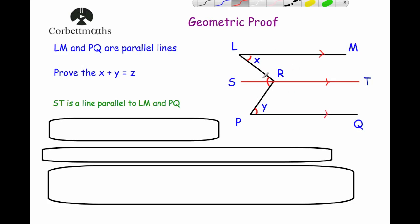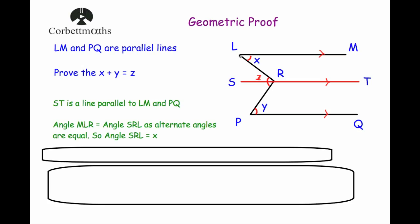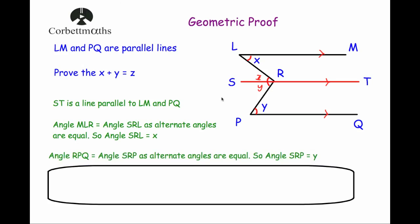Looking at the diagram, angle X would be alternate to this angle here — so this is equal to X. When writing down our reasons we must use the proper name: alternate angles, not Z angles. So angle MLR and angle SRL are alternate angles, so they're equal — meaning angle SRL is equal to X. Looking at the bottom half, if this angle is equal to Y, the angle here is also equal to Y. So angle RPQ equals angle SRP, meaning angle SRP is equal to Y as well.